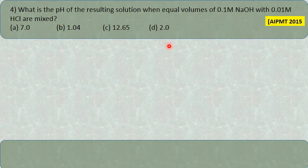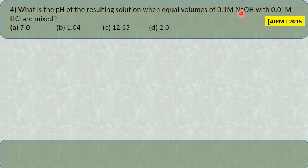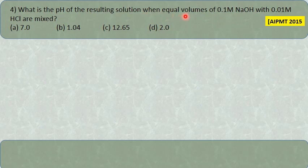AIPMT 2015 question: what is the pH when equal volumes of 0.1 molar NaOH and 0.01 molar HCl are mixed? A common mistake is misreading 0.01 as 0.1 molar HCl, concluding that the acid completely neutralizes the base and pH = 7. This is wrong due to improper reading. HCl concentration is actually less than NaOH, so the mixture will have excess NaOH and be alkaline.